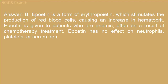Answer: B. Epoetin is a form of erythropoietin, which stimulates the production of red blood cells, causing an increase in hematocrit. Epoetin is given to patients who are anemic, often as a result of chemotherapy treatment. Epoetin has no effect on neutrophils, platelets, or serum iron.